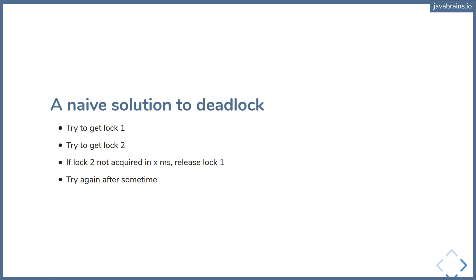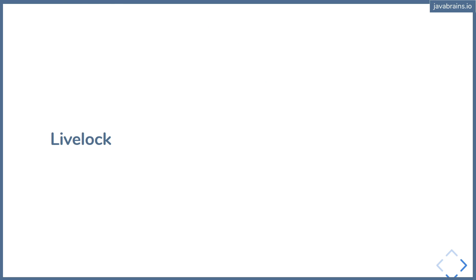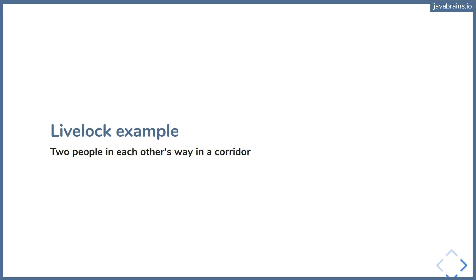They're not essentially dead — they're trying to do something — but they're still stuck. A real-world example of live lock is two people in each other's way in a corridor. I'm looking at my phone, I encounter somebody in a corridor, we both realize we're in each other's way. We both step to one direction — I step left, the other person steps right — and now we're again in each other's way. We say sorry and move again: I step right, the other person steps left, and we're still blocking each other. We can keep doing this dance indefinitely.